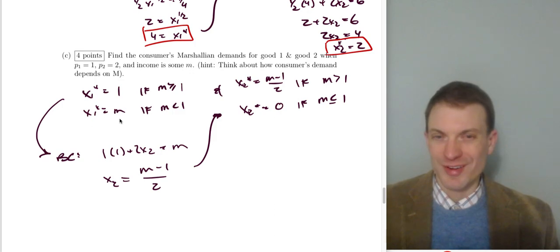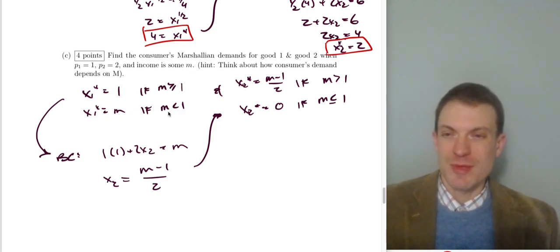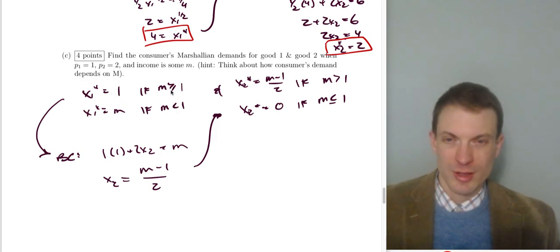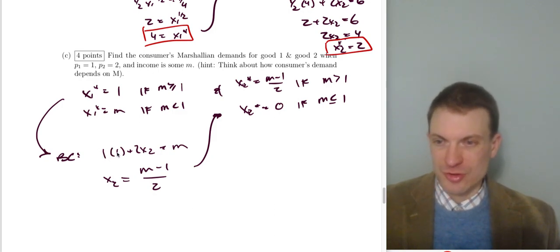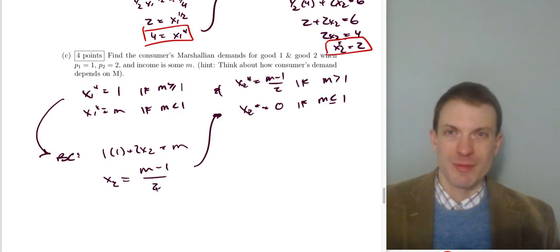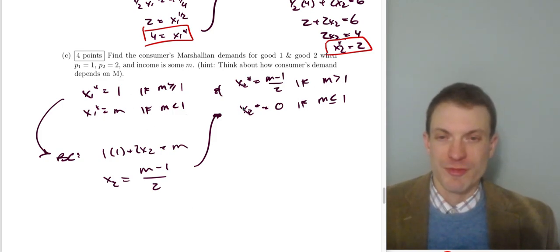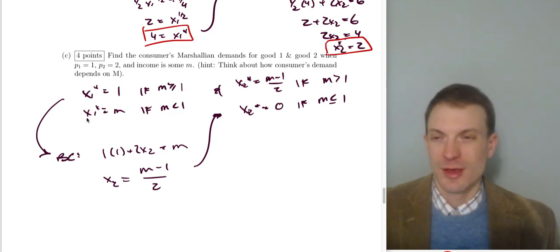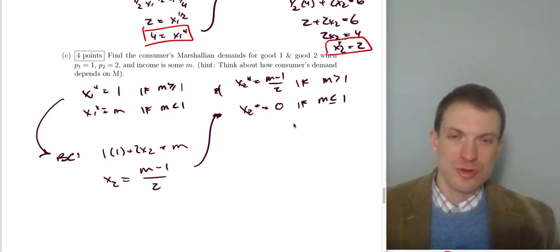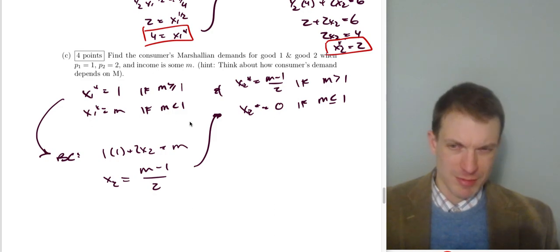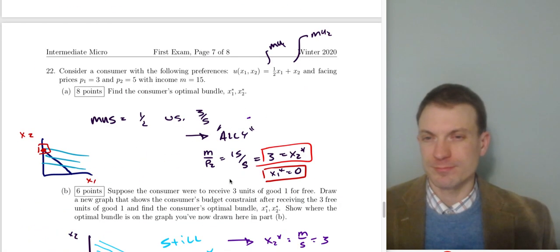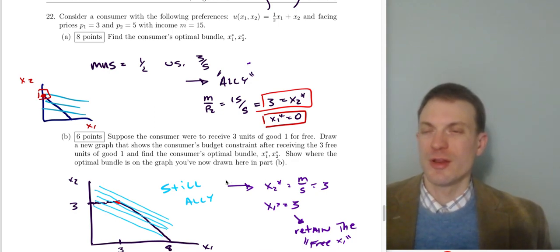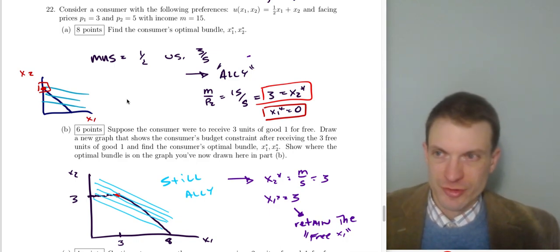Part c: find the Marshallian demands. Demand for good one: x₁* = 1 if m ≥ 1 (at P₁ = 1), or x₁* = m if m < 1. Dropping x₁* = 1 into the budget constraint gives demand for good two: x₂* = (m - 1)/2, but only if m ≥ 1. If m < 1, the consumer cannot afford the one unit of good one they want, so they spend all income on good one and buy zero of good two. You can verify by comparing MRS to the price ratio when m < 1.